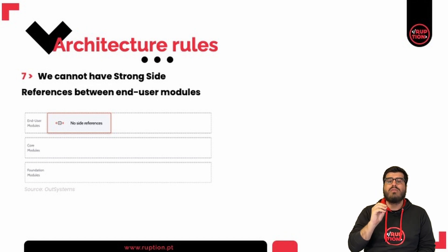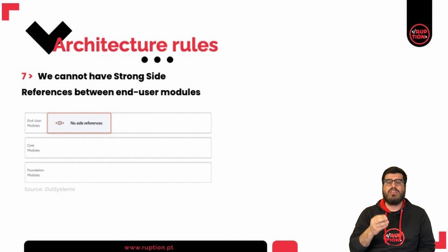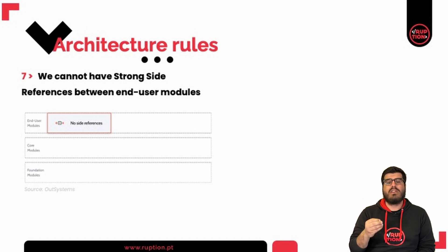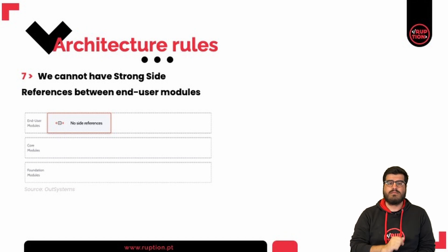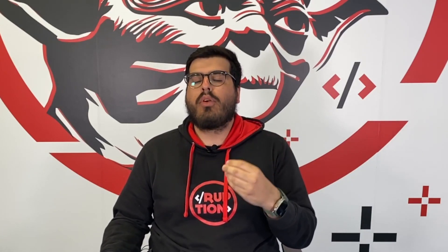The seventh rule is that on the end user layer, we cannot have strong side references between end user modules. In OutSystems version 11, screens are considered weak references, so you can reference screens on this layer without creating a cyclic reference. Your project architecture is always evolving — what was defined in the past is not a short answer for new functionalities or business concepts of the future. This is why, as our project matures, so must our architecture.